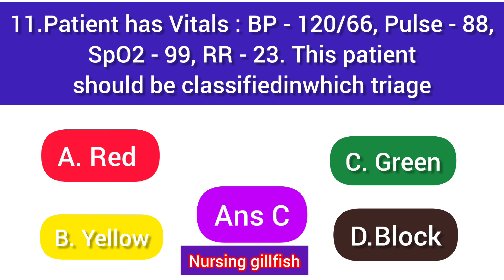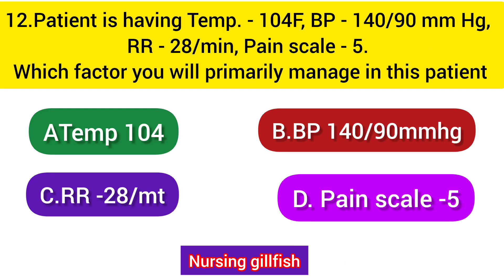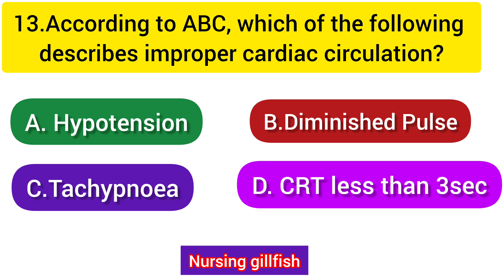Next question: The patient has temperature 104°F, BP 140/90, respiratory rate 28 per minute, and pain scale 5. Which factor will you primarily manage in this patient? Option A: Temperature 104, Option B: BP 140/90, Option C: Respiratory rate 28 per minute, Option D: Pain scale 5. The correct answer is Option A - Temperature, because it is 104 degrees Fahrenheit, so you must concentrate on the temperature.